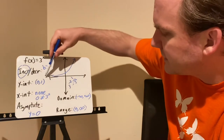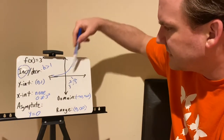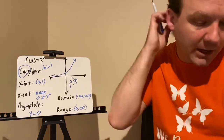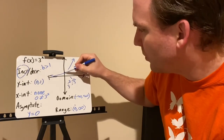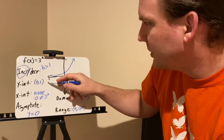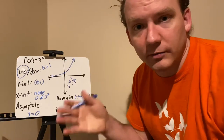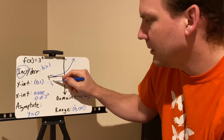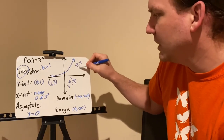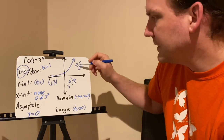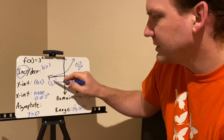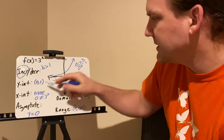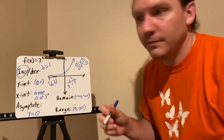The domain is all real numbers — negative infinity to positive infinity — for x. For the range, it never hits zero, so the range goes from 0 up to positive infinity. For average rate of change, take two points. For example, the y-intercept gives (0, 1), and when x = 1, f(1) = 3, giving (1, 3). Change in y is 3 − 1 = 2, change in x is 1 − 0 = 1, so the average rate of change from x = 0 to x = 1 is 2.